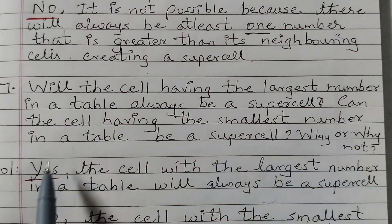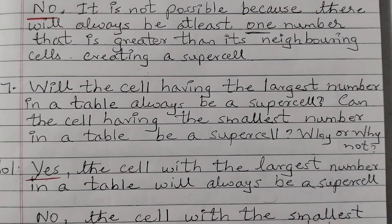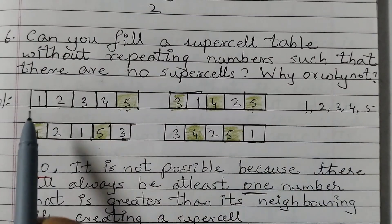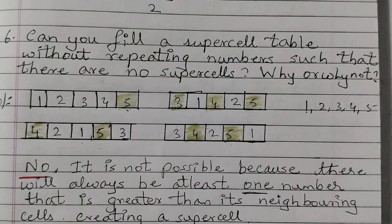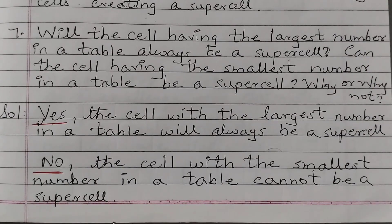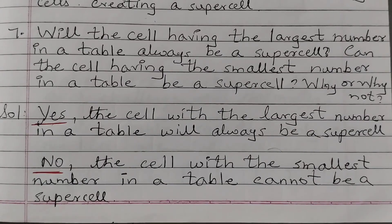Second part: Can the cell having the smallest number in a table be a supercell? Why or why not? The smallest number here is 1, and checking all positions, 1 is not a supercell anywhere. So the answer is no — the cell with the smallest number cannot be a supercell, since the smallest number is less than all other numbers in the table, it cannot be greater than its neighbors. The largest number is always a supercell and the smallest number can never be a supercell.